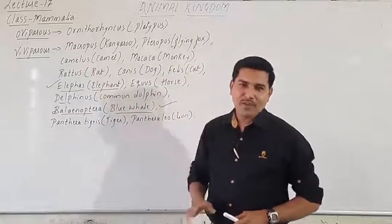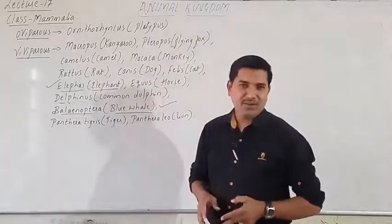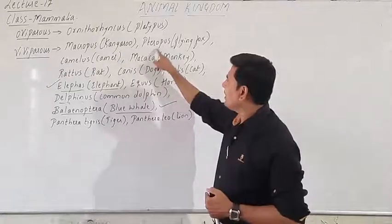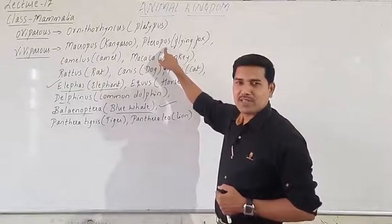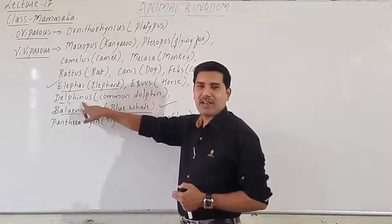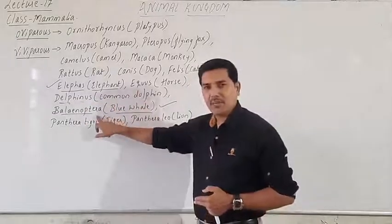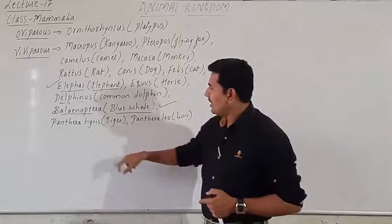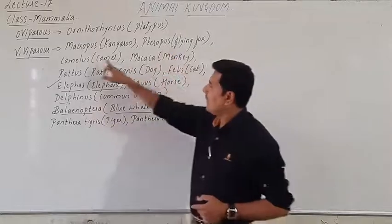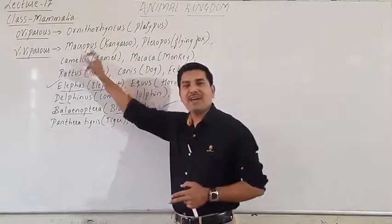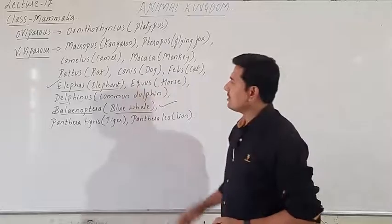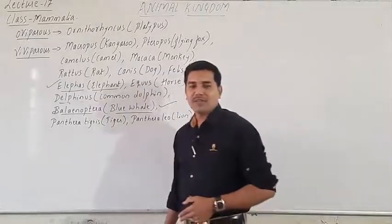For your exam's objective part, these are most important. Pteropus — the common name is flying fox. Delphinus — the common name is common dolphin. Balaenoptera — this has been asked before — it is the blue whale. Pteropus and Macropus are the examples which will be asked most often and most commonly, so that is why we are stressing on this part. This covers the examples of class Mammalia.